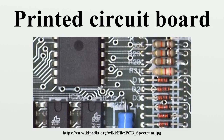Although more accurate, the term printed wiring board has fallen into disuse. A PCB populated with electronic components is called a printed circuit assembly, printed circuit board assembly, or PCB assembly. The IPC preferred term for assembled boards is circuit card assembly, and for assembled backplanes it is backplane assemblies. The term PCB is used informally both for bare and assembled boards. The world market for bare PCBs reached nearly $60 billion in 2012.